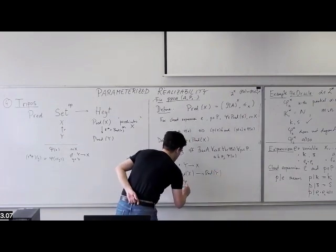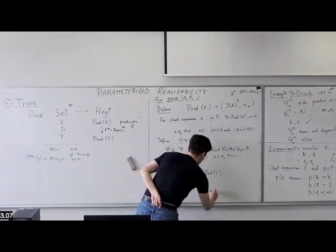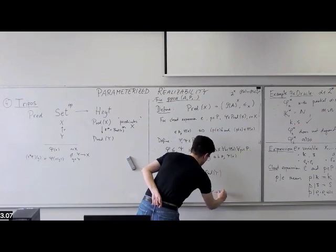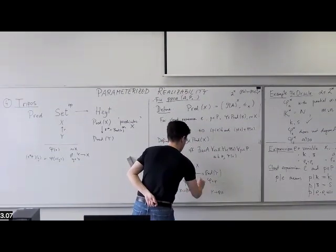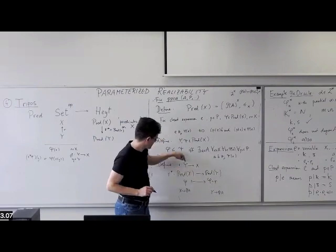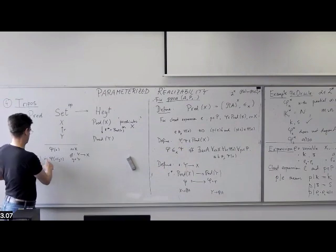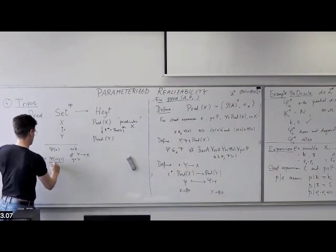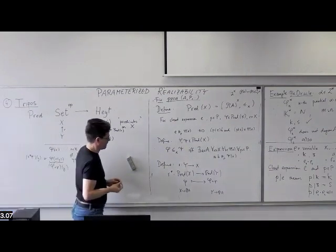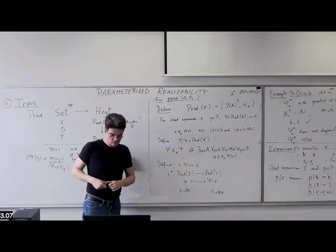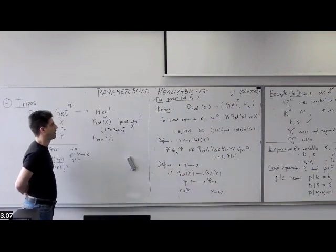The functorial action is just pre-composition: if I have R: Y → X, then R★(φ)(y) = φ(R(y)) — R★ is φ composed with R. This gives us a tripos. What do we have to verify? We need to check that Pred(X) is a Heyting pre-algebra — the order needs to be reflexive (use SKK or identity) and transitive. Then we need the least element, the top element, conjunction, disjunction, and implication.